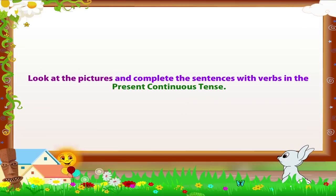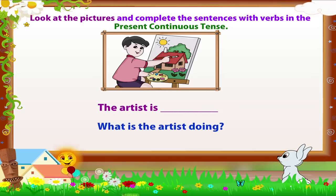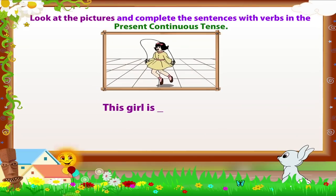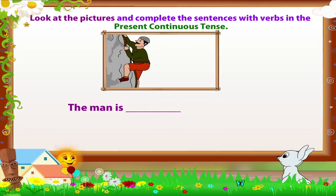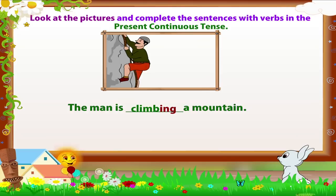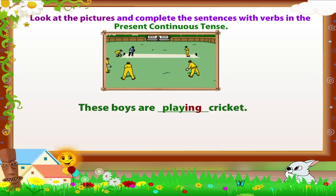Here are some more sentences with blanks. Now let us look at the pictures and complete the sentences with verbs in the present continuous tense. 'The artist is painting.' 'This girl is skipping.' 'The man is climbing a mountain.' 'These boys are playing cricket.' That was easy!